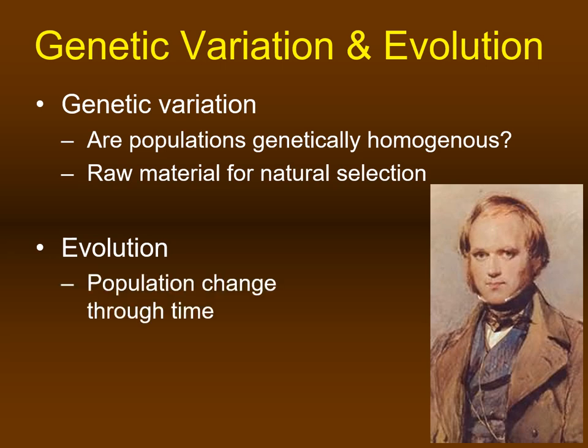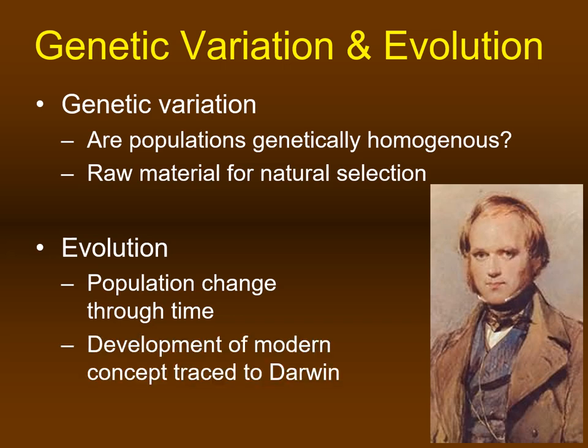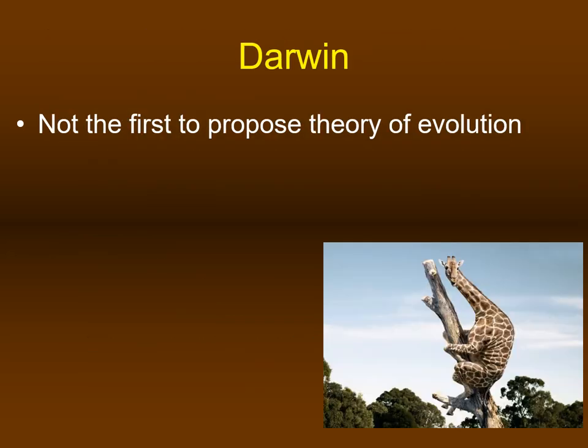Evolution is the change of populations through time. This change in a population's phenotypical characteristics allows the population to adapt to a changing environment. In other words, a changing environment works as the source of selective pressure and natural selection, which in turn drives evolutionary processes. The concept of natural selection as a driving force for evolution was proposed by Darwin, but he was not the first to propose a theory of evolution.